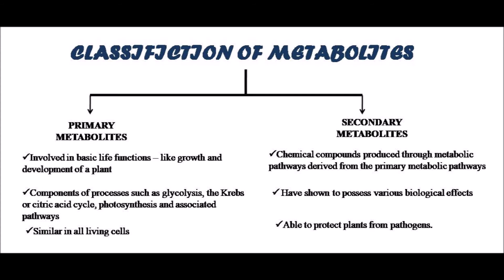Secondary plant metabolites are abbreviated as SPM, and they play an important role in alleviating several ailments in traditional medicine and folk uses. Secondary plant metabolites are classified according to their chemical structure into various classes.